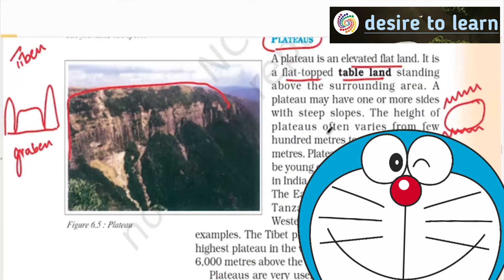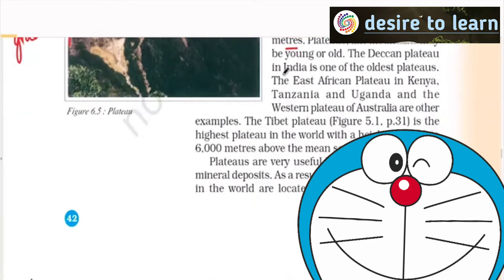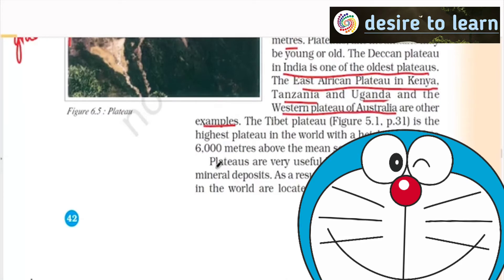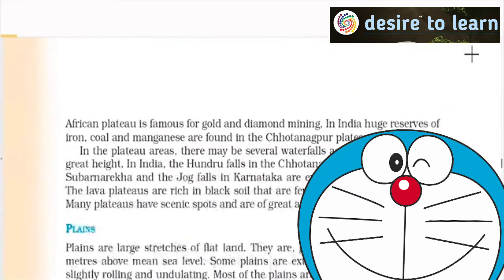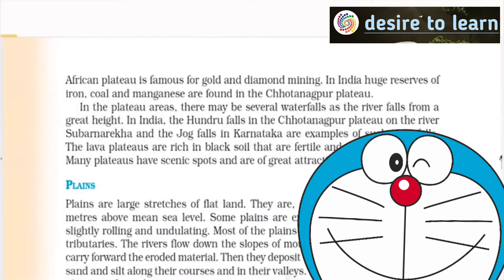The height of the plateaus often varies from a few hundred meters to several thousands of meters. The Deccan Plateau in India is one of the oldest plateaus. East African Plateaus in Kenya, Tanzania, Uganda and the Western Plateaus of Australia are some examples. It is believed that plateaus have good mineral deposits. Where do you find good mineral deposits? Plateaus, mountains, and then plains a bit.